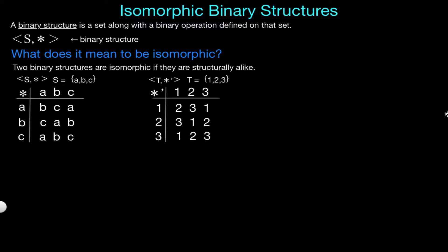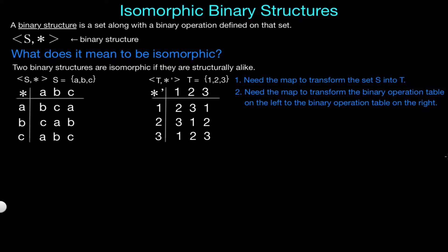So let's break this down a little bit. In order for the map to transform the structure S into the structure T, we need two things from it. First, we need the map to transform the set S into the set T, and second, we need the map to transform the binary operation table on the left to the one on the right. So let's try to find a map that satisfies both 1 and 2.